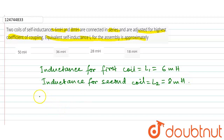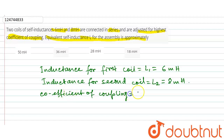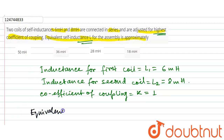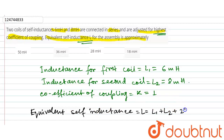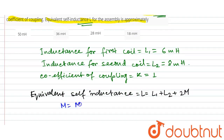We will write the coefficient of coupling. Coefficient of coupling is equal to k. The conjugate self-inductance is equal to L. We read the formula. Equivalent self-inductance is equal to L1 plus L2 plus 2M, where the amount of mutual inductance is equal to M.